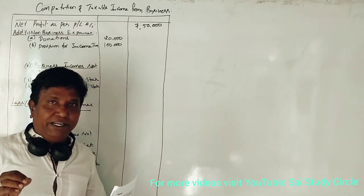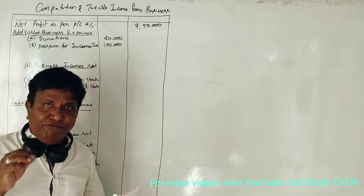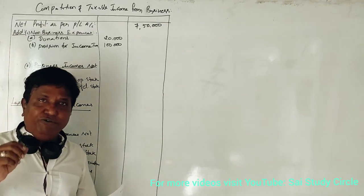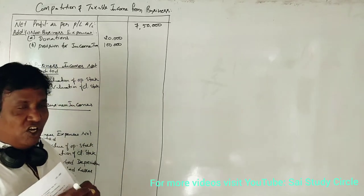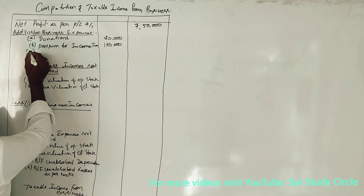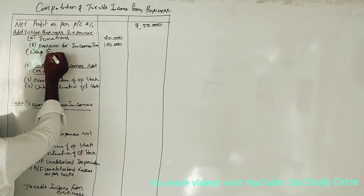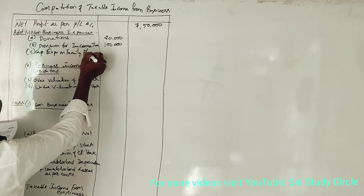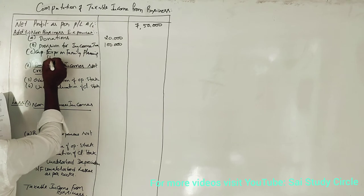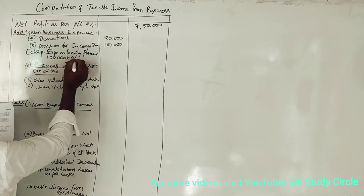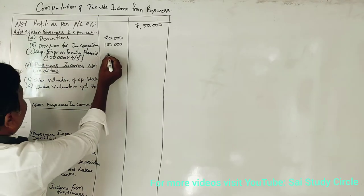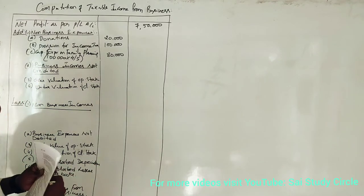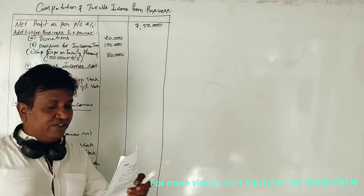Total capital expenditure on family planning is one lakh rupees. Four-fifths of that — 80,000 rupees — is inadmissible in nature. There are no other inadmissible expenses.